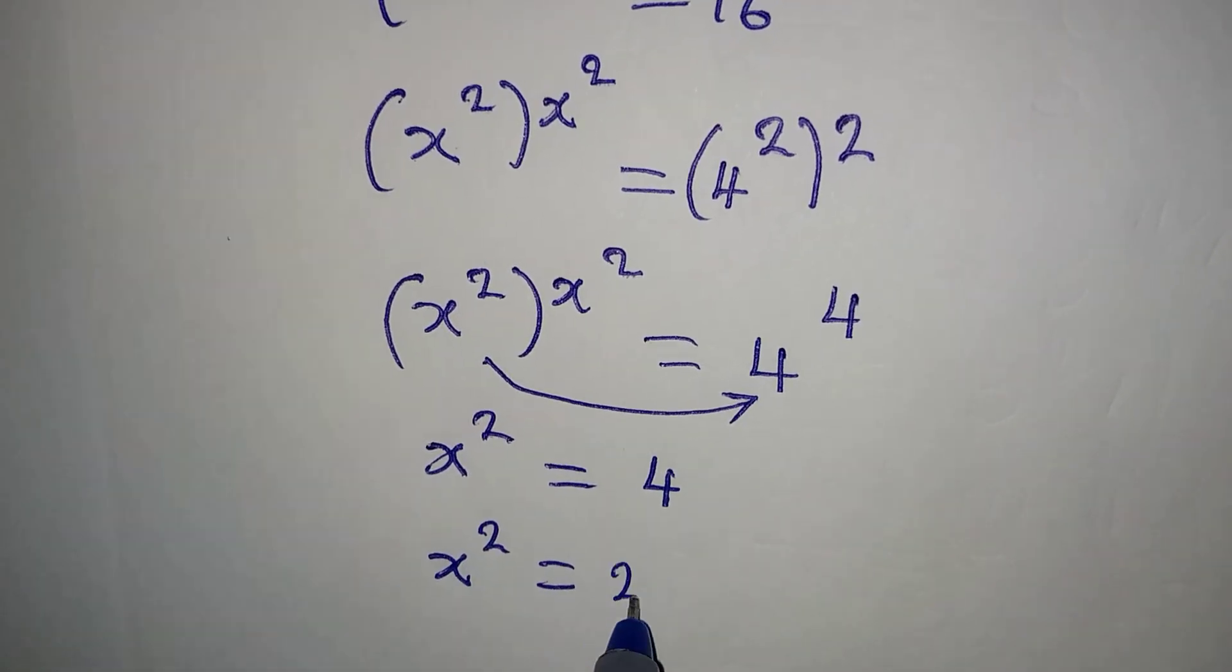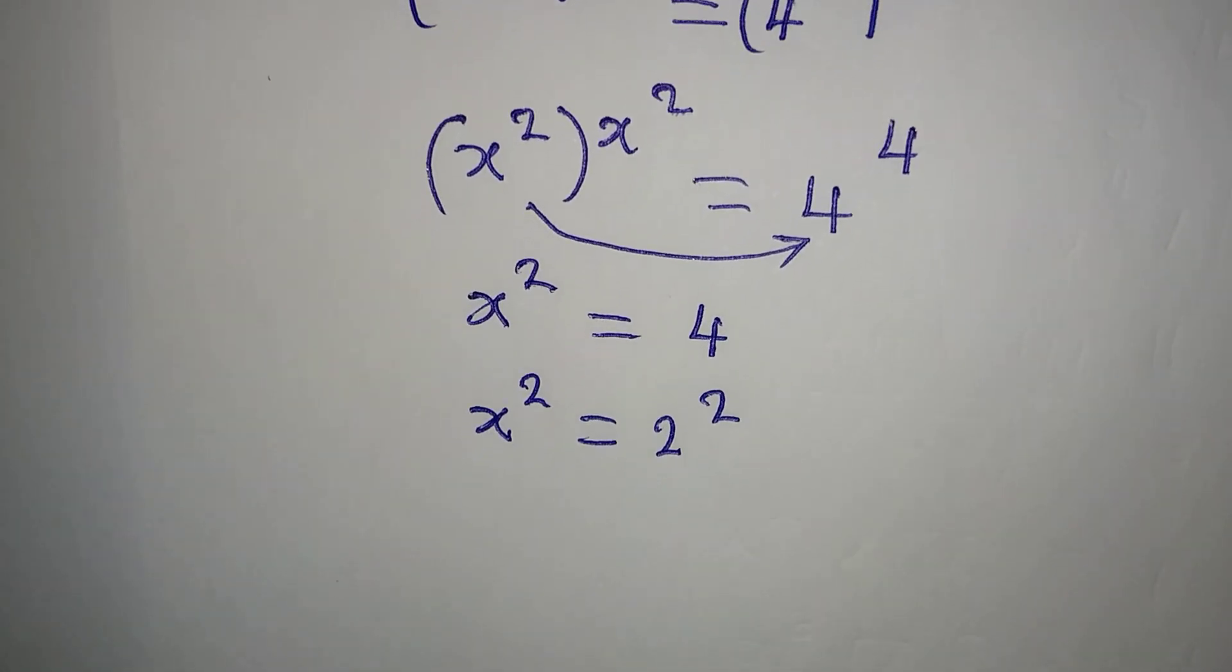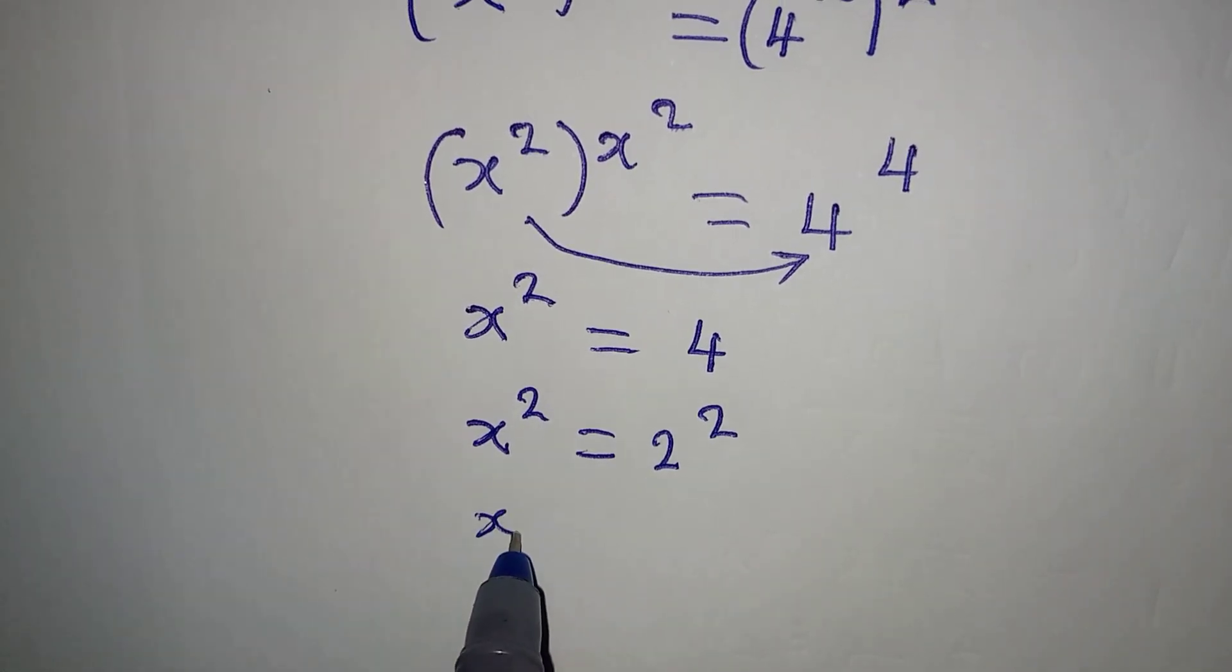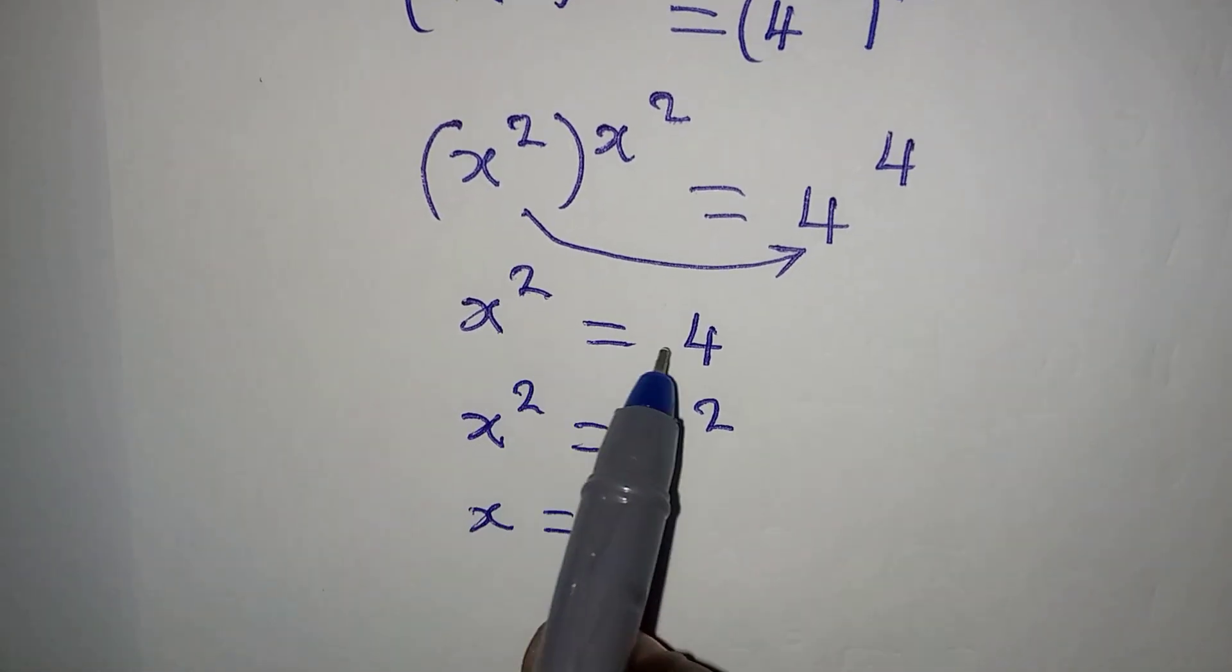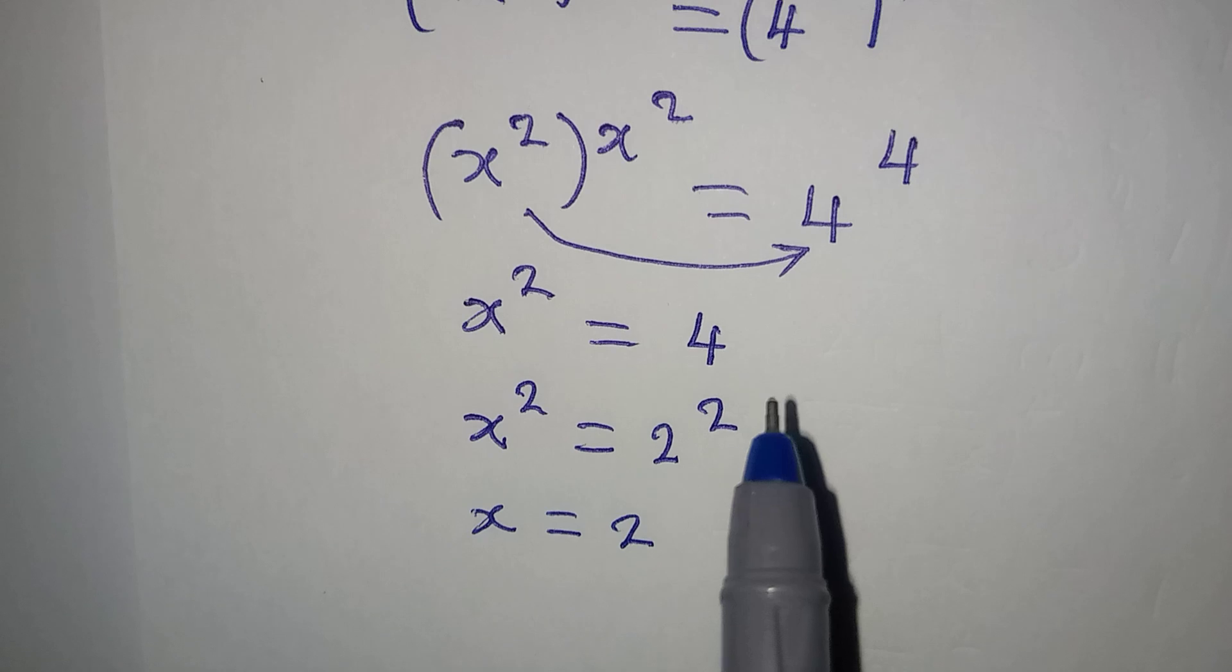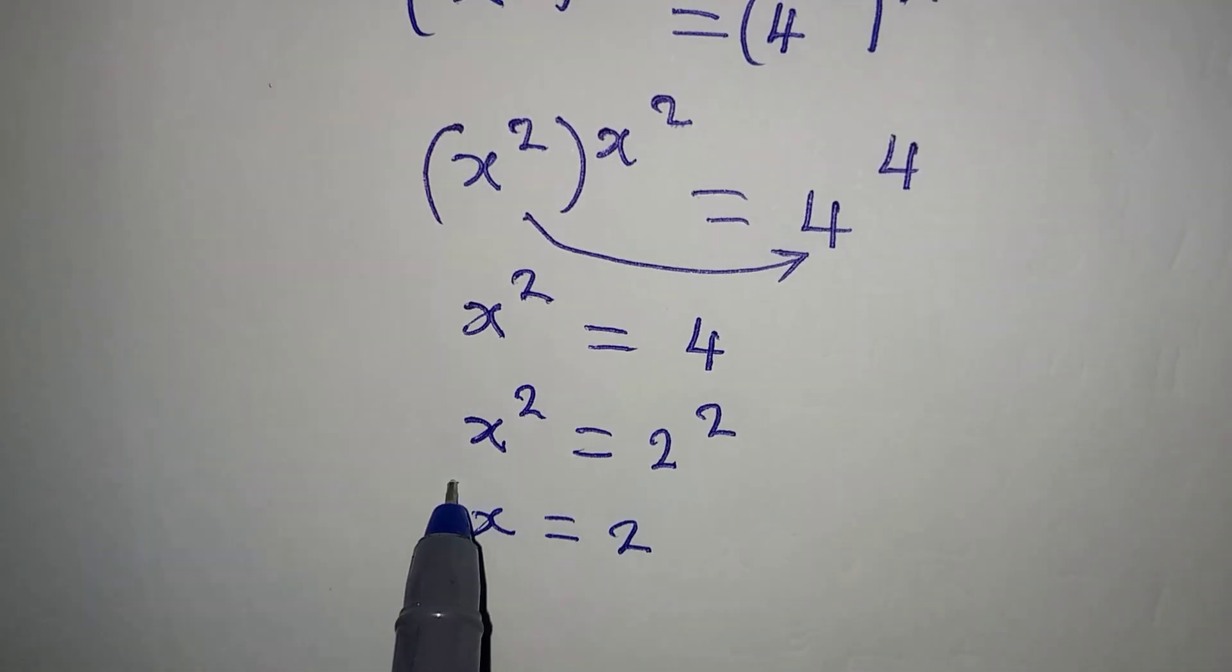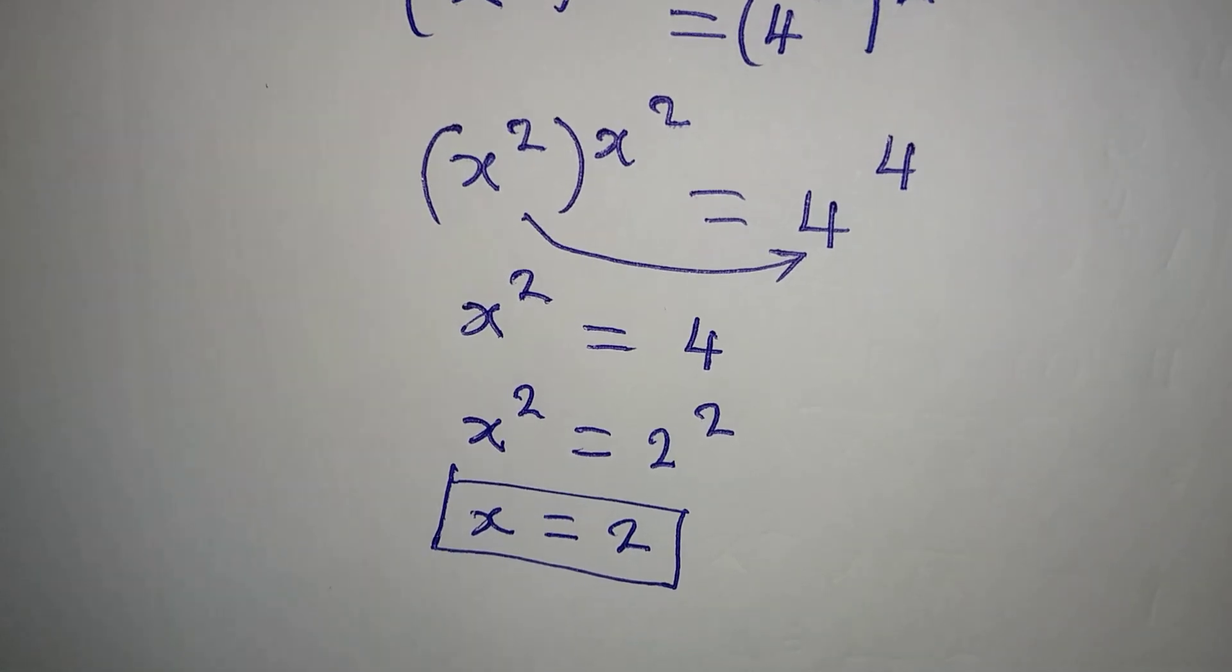And then from here we can conclude that x squared is also equal to 2 squared. What can we observe? Since the bases are the same, we can work with the powers, so we can say that x is equal to 2. I just want to get only the positive value. If not, from here I can get two values of x, the negative and the positive, but I'm picking only the positive.